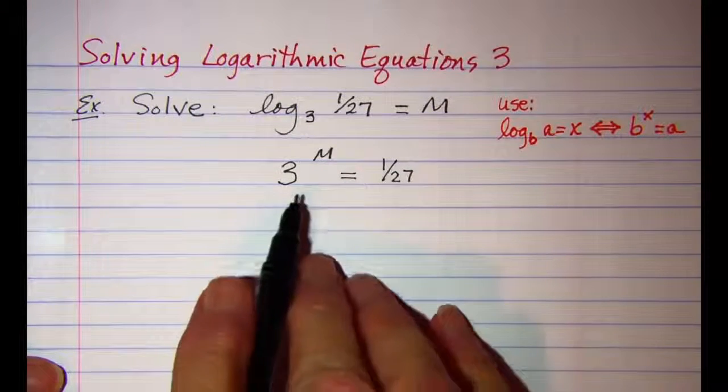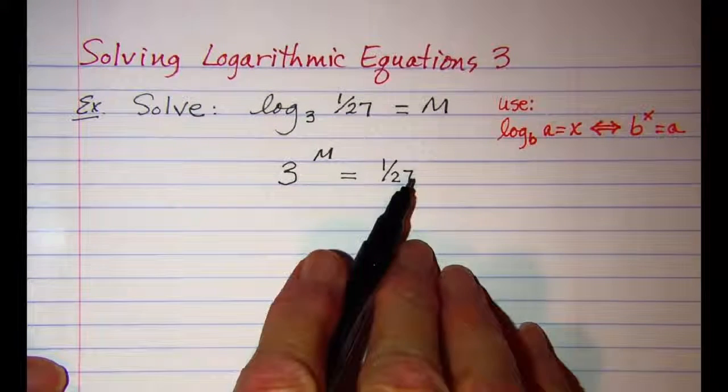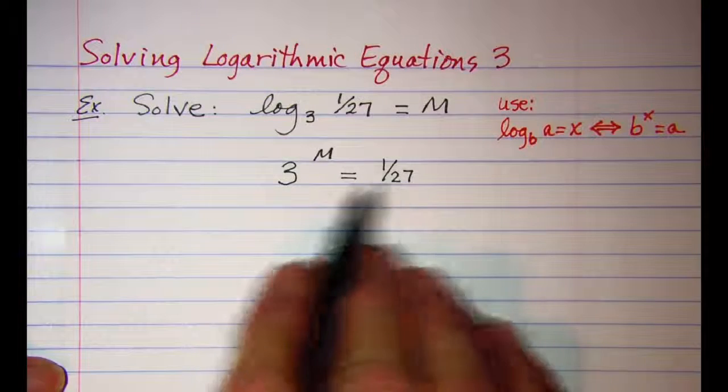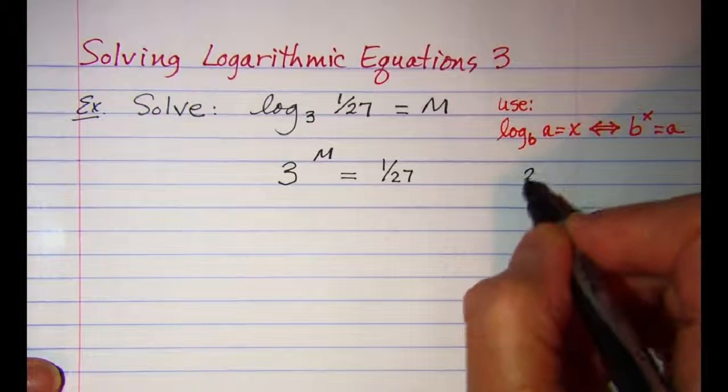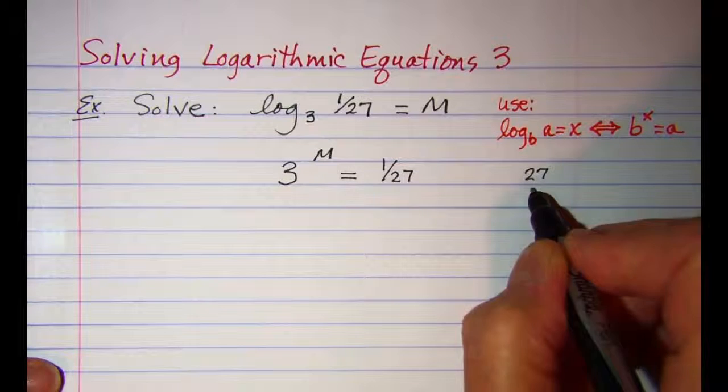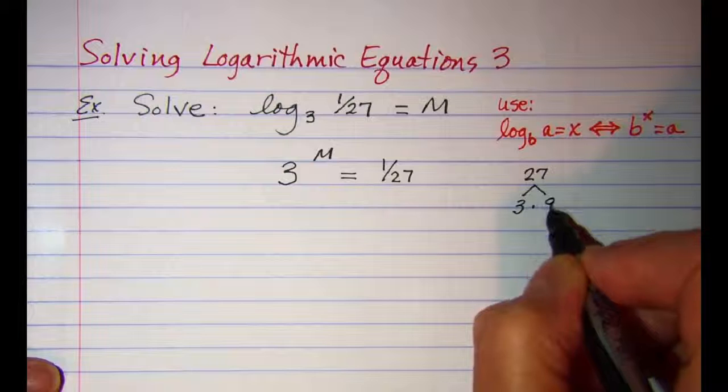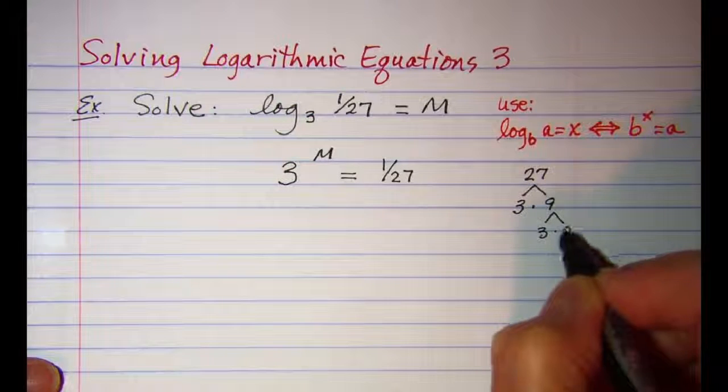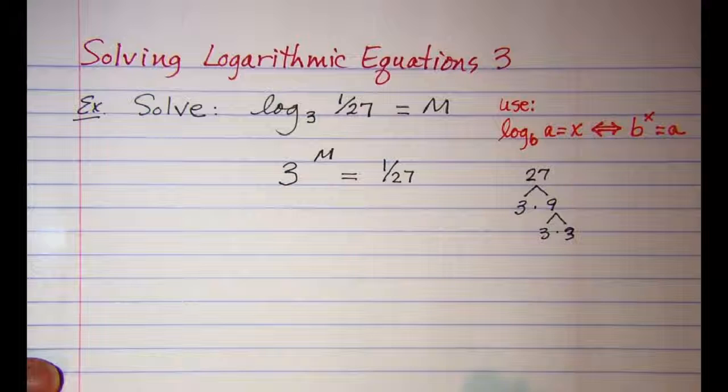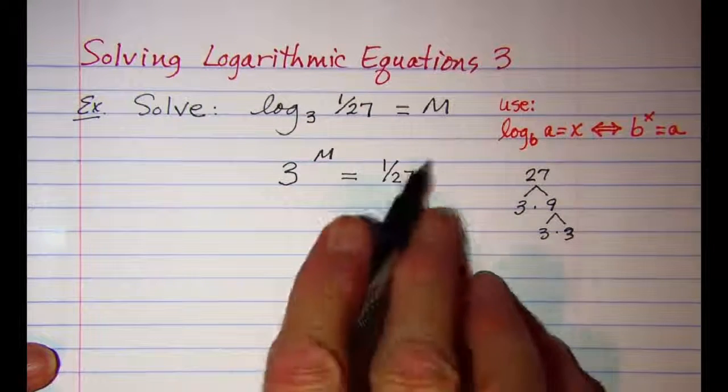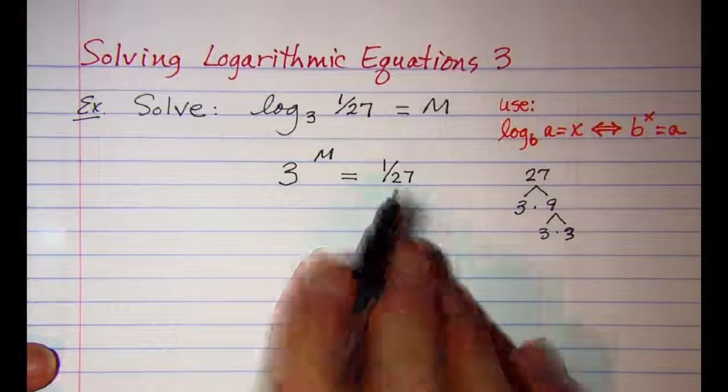Now we'd like to change both of these expressions to the same base if we can. 27 can be written as a power of 3. 27 is 3 times 9, and then 9 is 3 times 3, so 3 to the third power is what 27 is equal to.